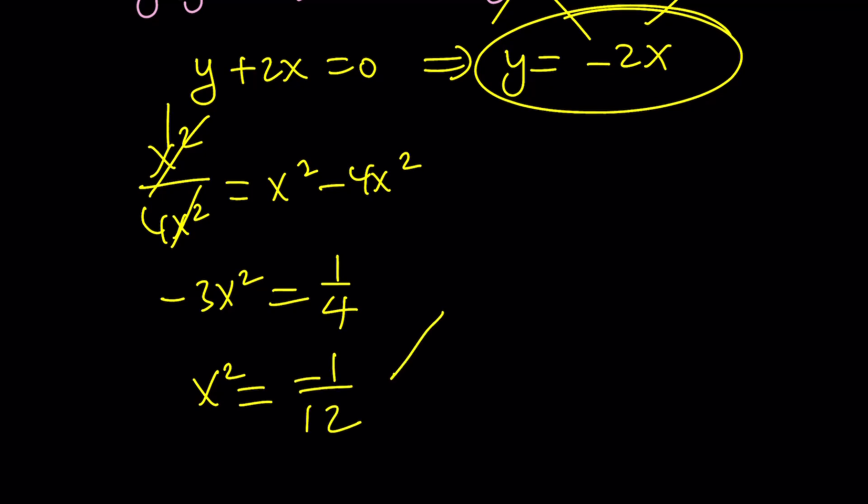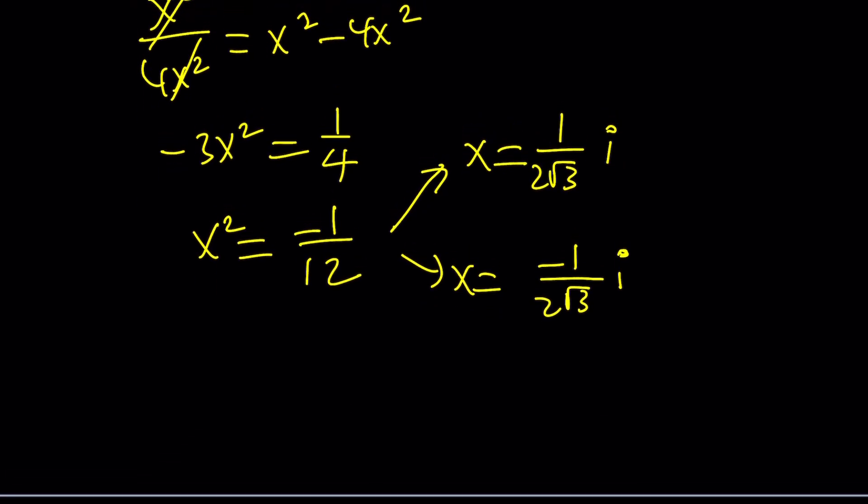From here, we get two values. x is either, wait a minute, x is not real, because its square is negative. It's complex. So, one of the values is going to be 1 over 2 root 3i. The other one is going to be negative 1 over 2 root 3i. Basically, these are going to be the square roots of negative 1 over 12 in the complex world.